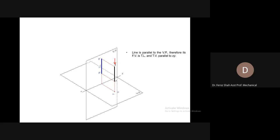The top view would be a point — both ends merge and are denoted A and B — and it is still parallel to the XY reference line. We have seen that if the top view is parallel to the XY line, then one view is parallel to XY and the other must be the true length.